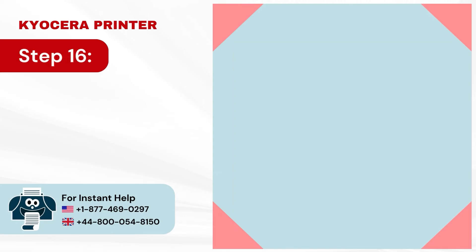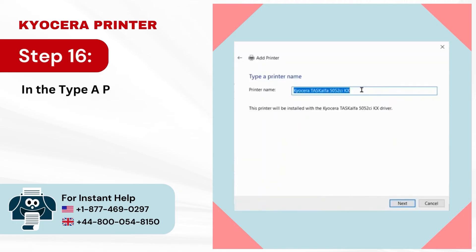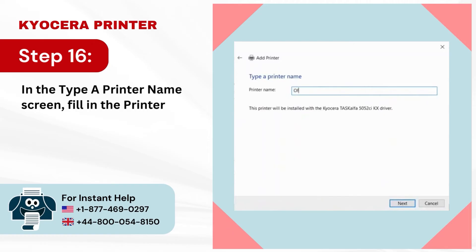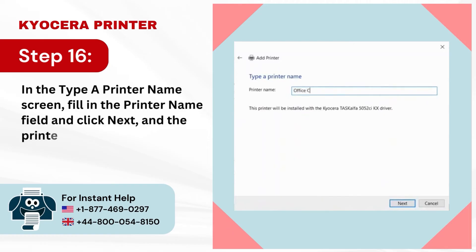Step 16: In the Type A Printer Name screen, fill in the Printer Name field and click Next, and the printer will start installing.